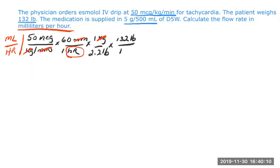That allows us to cancel out pounds. Now we know we need milliliters on top, so we can put in the concentration of 500 milliliters in five grams. Now we can keep milliliters. Now we have both of the units we need for our answer — milliliters on top and hours on the bottom.